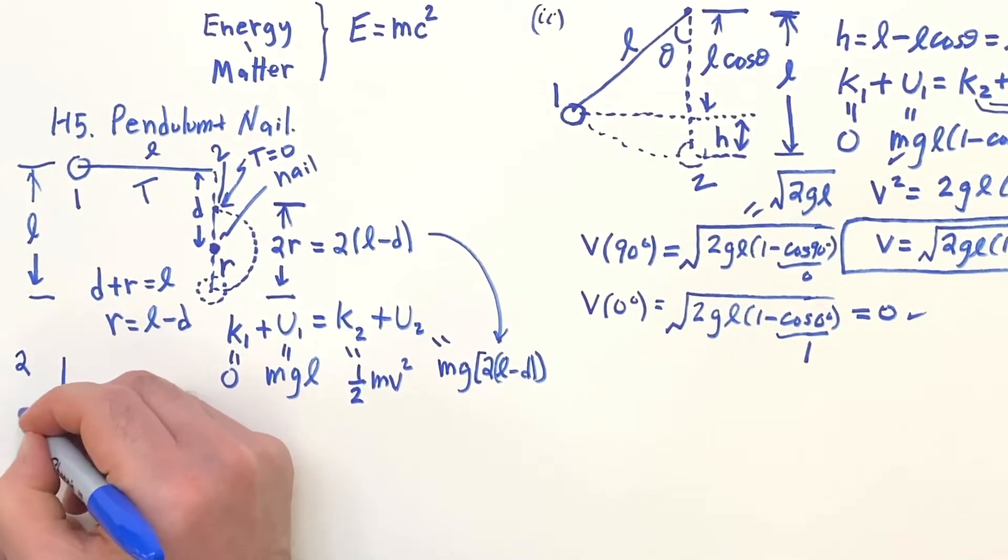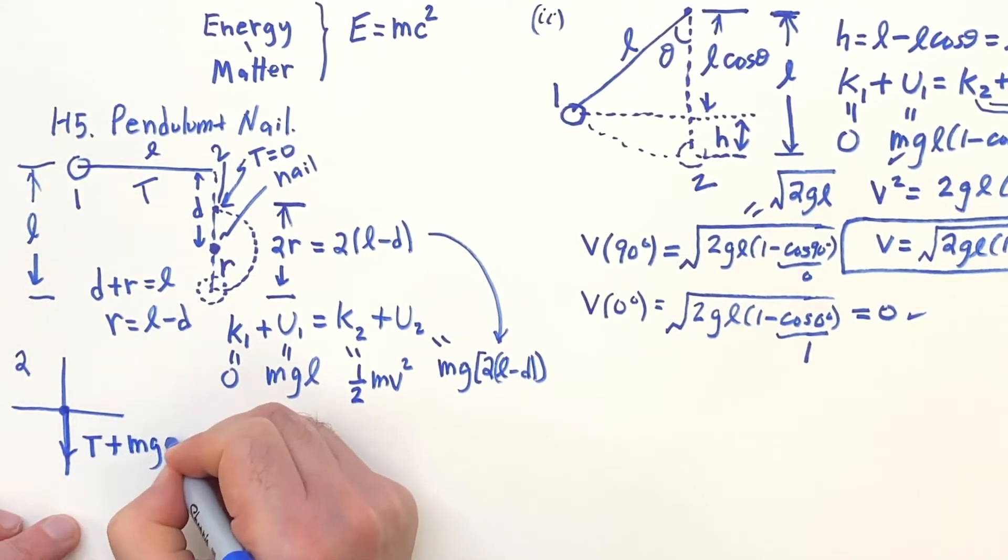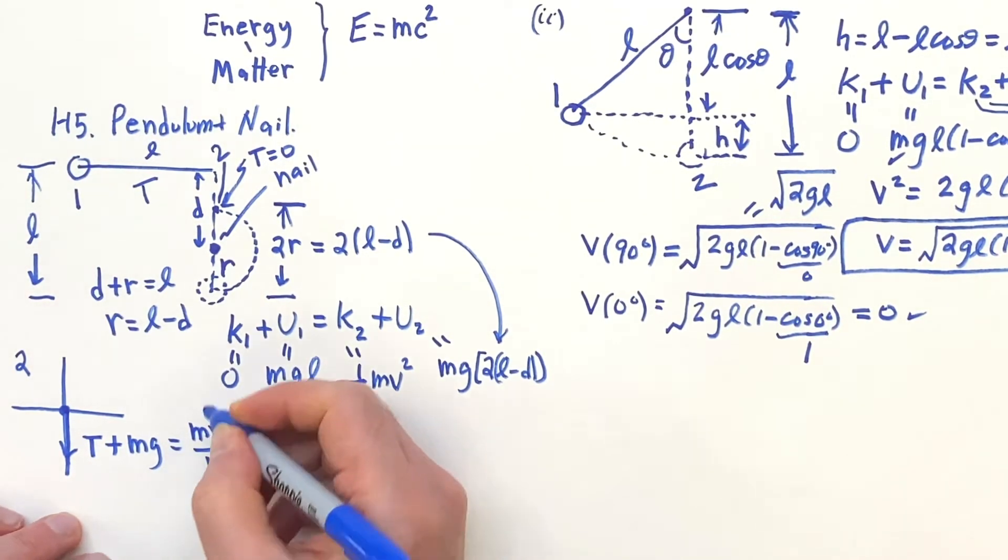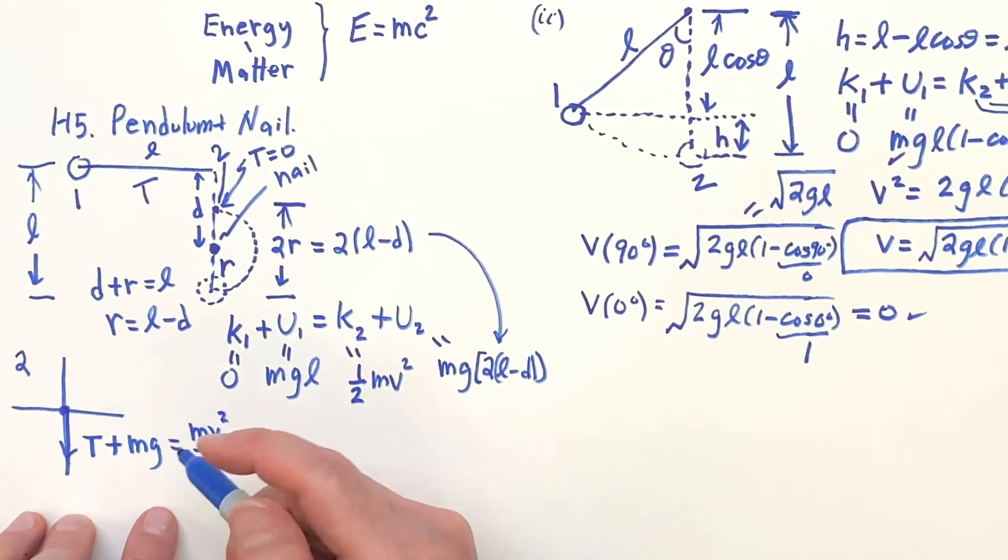And the way to do that is to do the force diagram at point two. So at point two, if we do the force diagram, we have pointing down tension plus Mg. And that's going to equal MV squared over R. That's circular, you know, acceleration, centripetal acceleration. We want this tension to be zero, just have enough there, just makes it, just barely makes it. So this gives me the second equation I need.